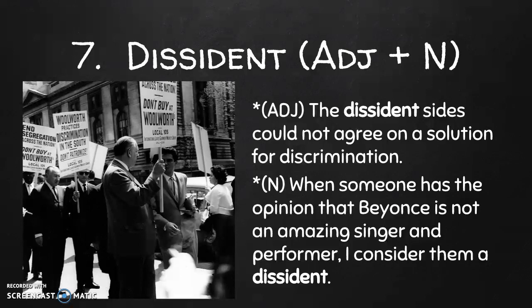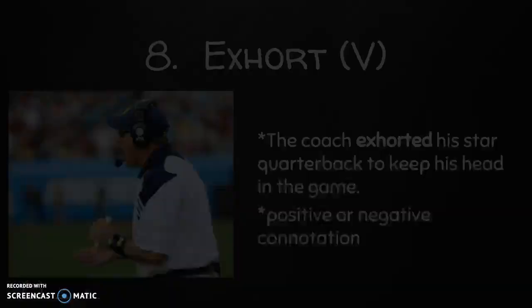For the noun definition of dissident, a person is a dissident — someone who disagrees with the majority or with an established organization. Basically, a dissident is someone who has an unpopular opinion. Our example noun sentence is: when someone has the opinion that Beyoncé is not an amazing singer and performer, I consider them a dissident.